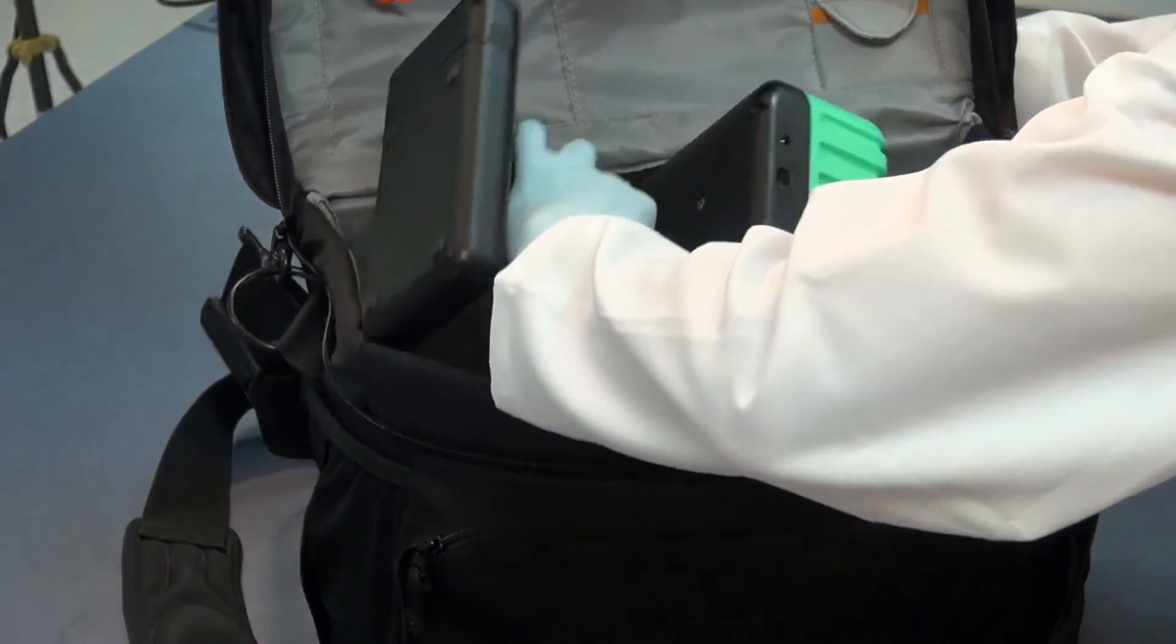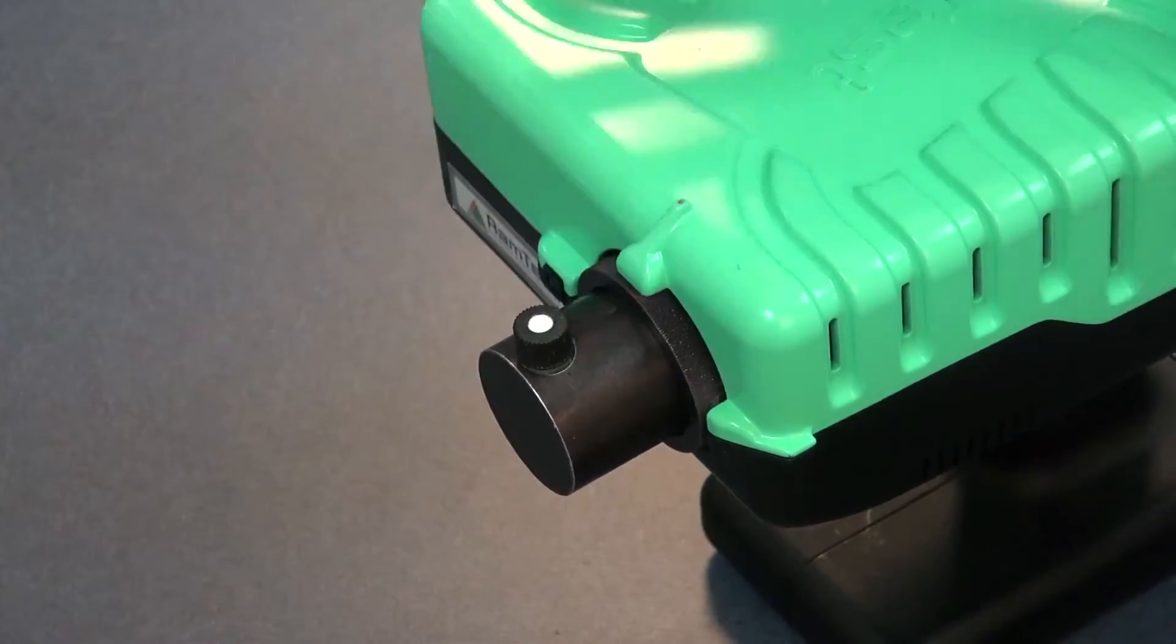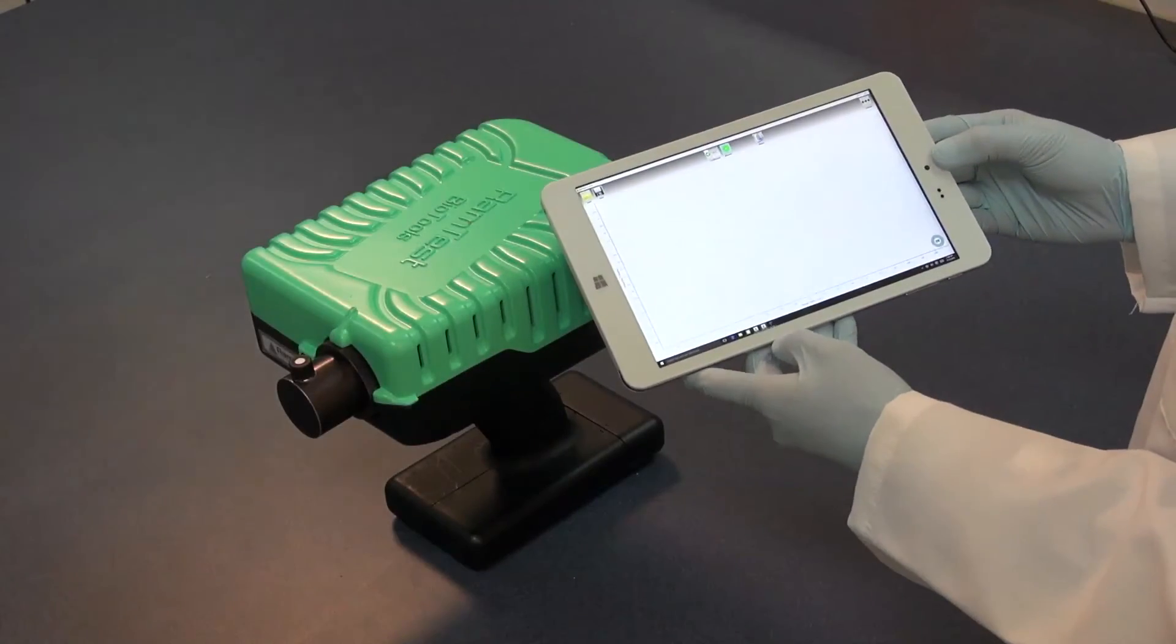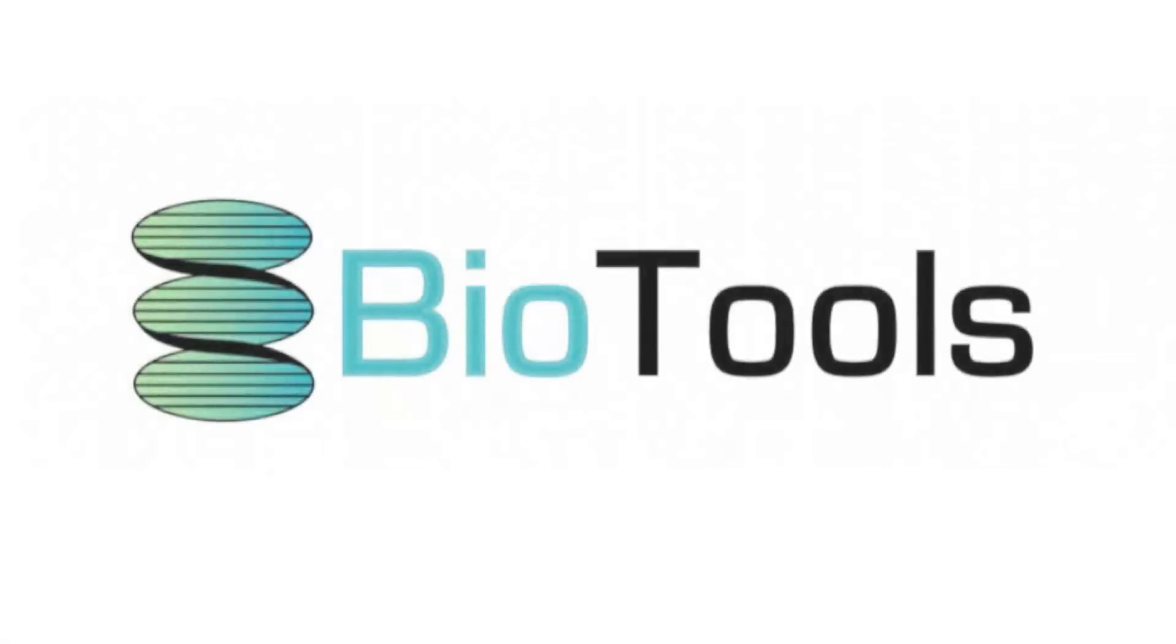There are other handhelds on the market, but RamTest is five times faster, saving time and labor. Measure with a handheld Raman you couldn't measure before. BioTools.